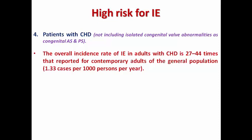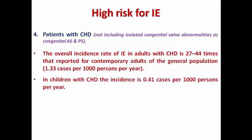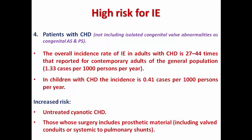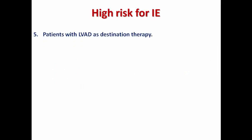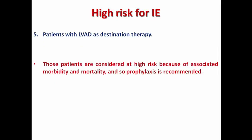The overall incidence rate of infective endocarditis in adults with congenital heart disease is 27 to 44 times higher than those with a structurally normal heart. In children, the incidence is 0.41 per 1,000 persons per year. The risk is increased in untreated cyanotic congenital heart disease and in those whose surgery includes prosthetic material like valved conduits or systemic-to-pulmonary shunts. The risk is also high in the first six months after transcatheter ASD or VSD closure or surgical closure with prosthetic material. Patients with LVAD are also considered high risk due to associated morbidity and mortality.